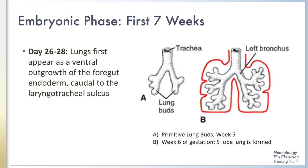As you will recall, the lung bud epithelium is derived from foregut endoderm, while cartilage, smooth muscle, blood vessels, and connective tissue are derived from the surrounding mesoderm.